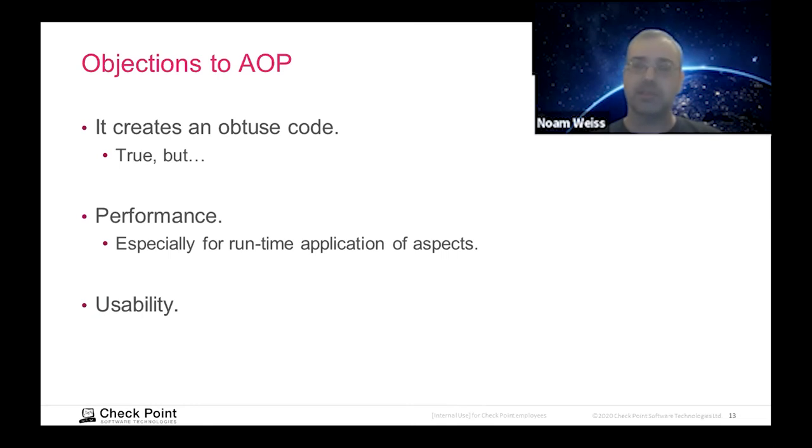The most serious objections that I have are, first of all, performance. Certainly, when you're using runtime application of aspects, you're running into a big performance penalty in which every time a function is called, you need to evaluate whether or not an aspect is relevant to that invocation. So that is a big element that you need to consider. The other big element is, as I said, we have two of the three elements. The third one, the usability.